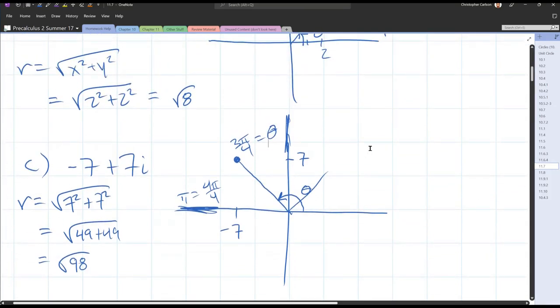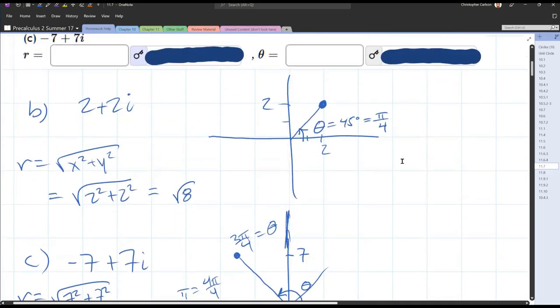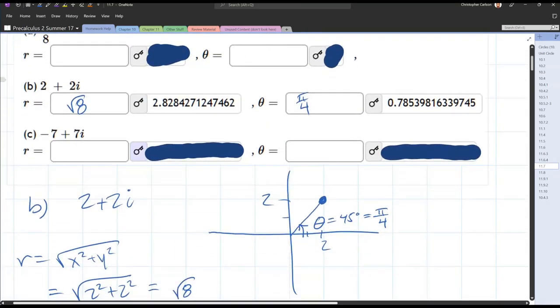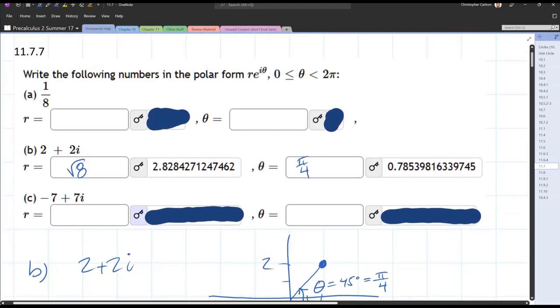To type this in, you can leave it as 3 pi over 4 when you answer this question. All right. So we're going to do our last one now, which is one eighth.